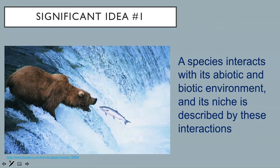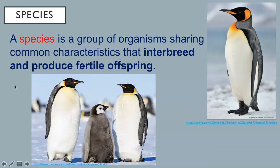A species is a group of organisms sharing common characteristics that interbreed and produce fertile offspring. In this image, you see an example of the king penguin species, and here is a breeding pair. This definition is really important and comes up over and over again throughout this course. Lock it in now. You must always include the ability to interbreed and produce fertile offspring in this definition of species.